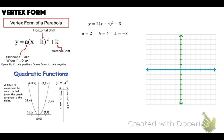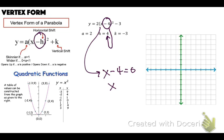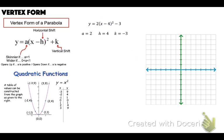Our A is 2. Our H — since there's a negative here, it's always opposite of whatever this is. Since that's a negative 4, H equals positive 4. You can also think about this as solving: if x minus 4 equals 0, you add the 4 over and get x equals 4. K equals negative 3. Our vertex is H comma K, so our vertex is (4, negative 3). Go over 4, down 3 — there is our vertex.